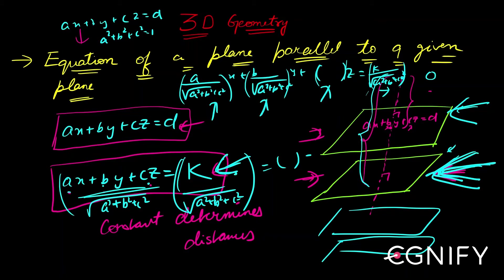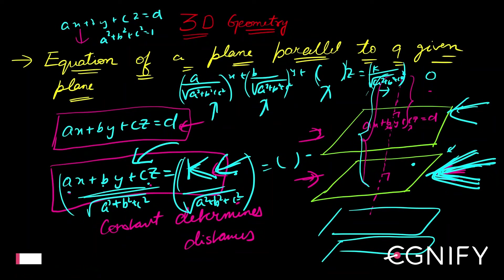Alternatively, if I know a point on the plane, I substitute it into the equation to get k. Once I get k, I get the specific plane. So k determines which parallel plane I am choosing. With this, we are done with this topic. Let's now move on to the angle between two planes.